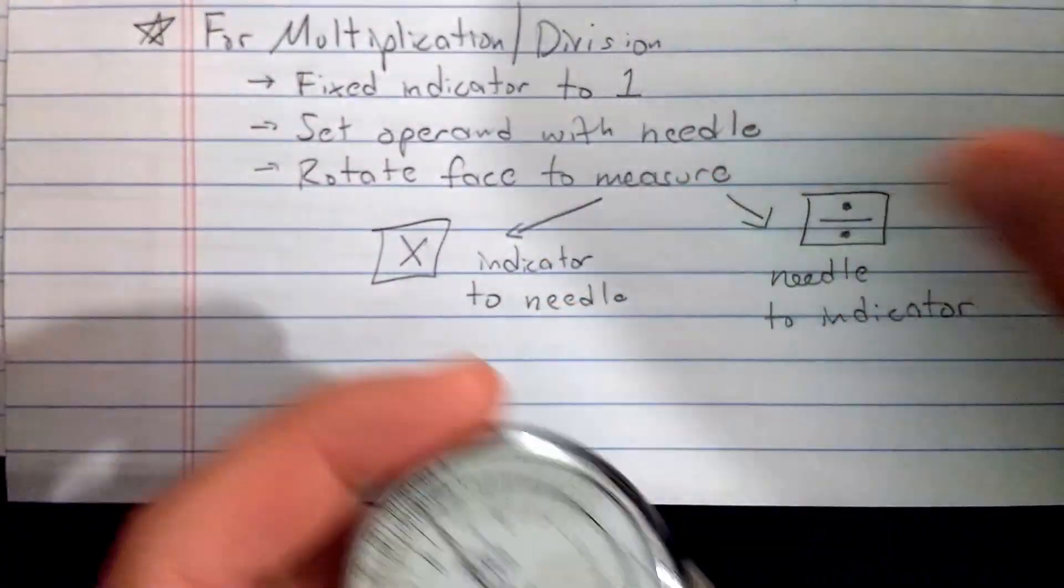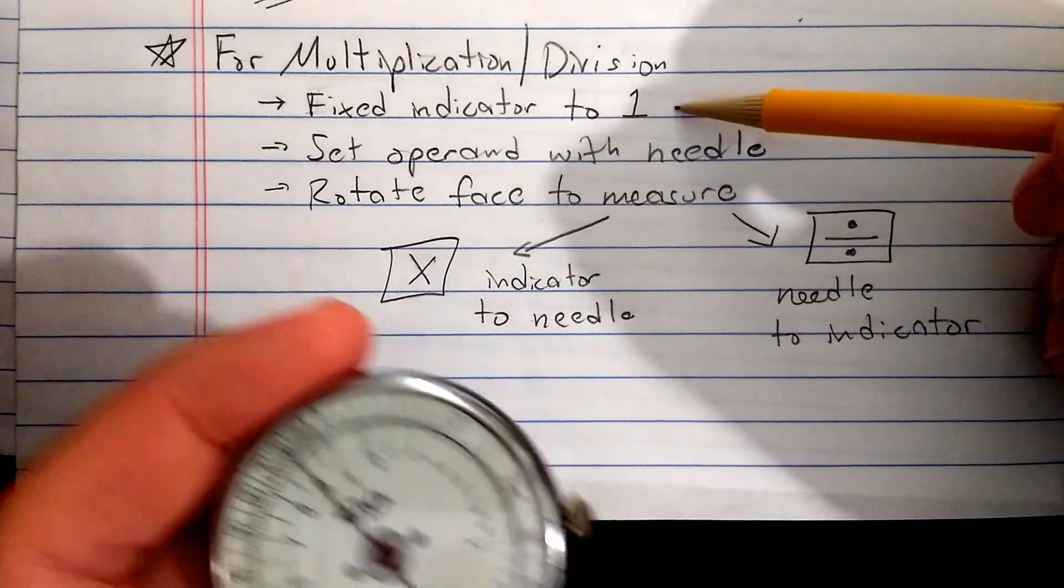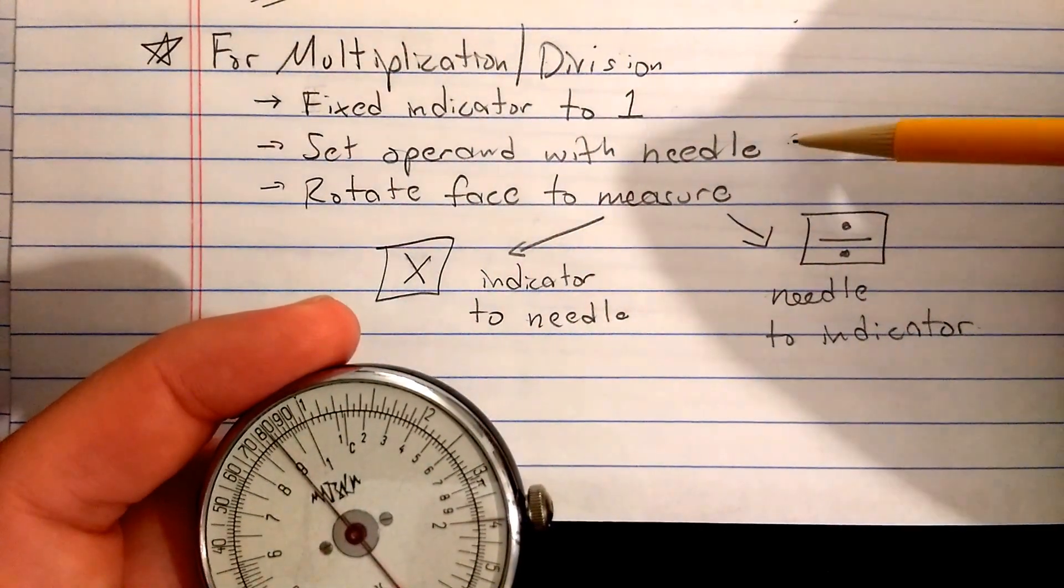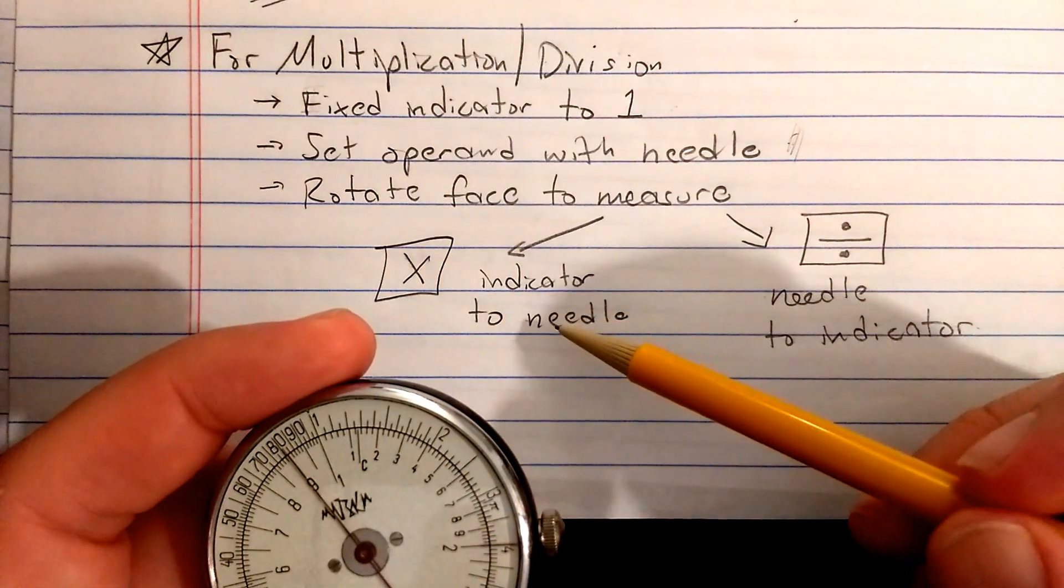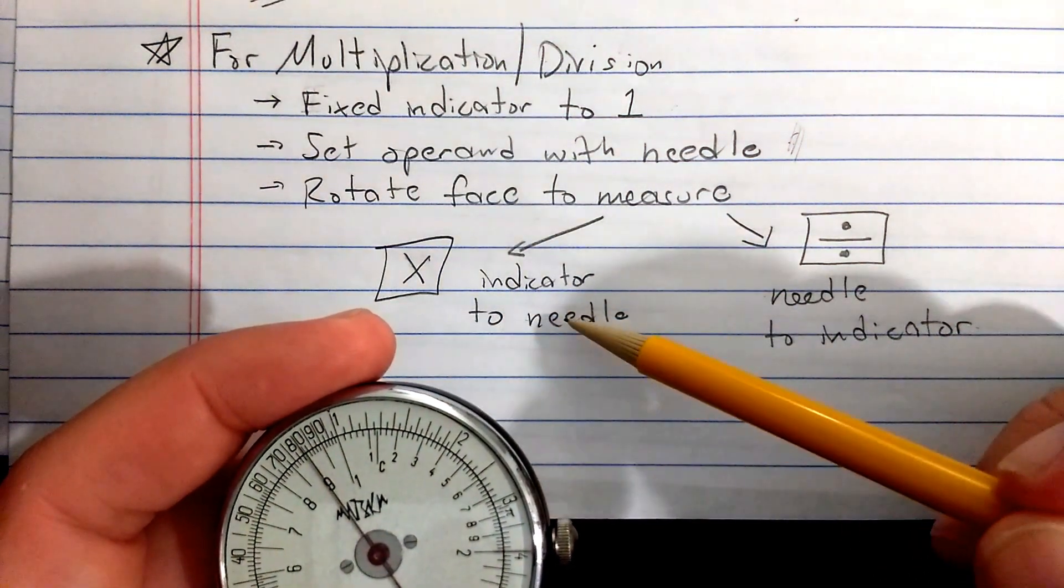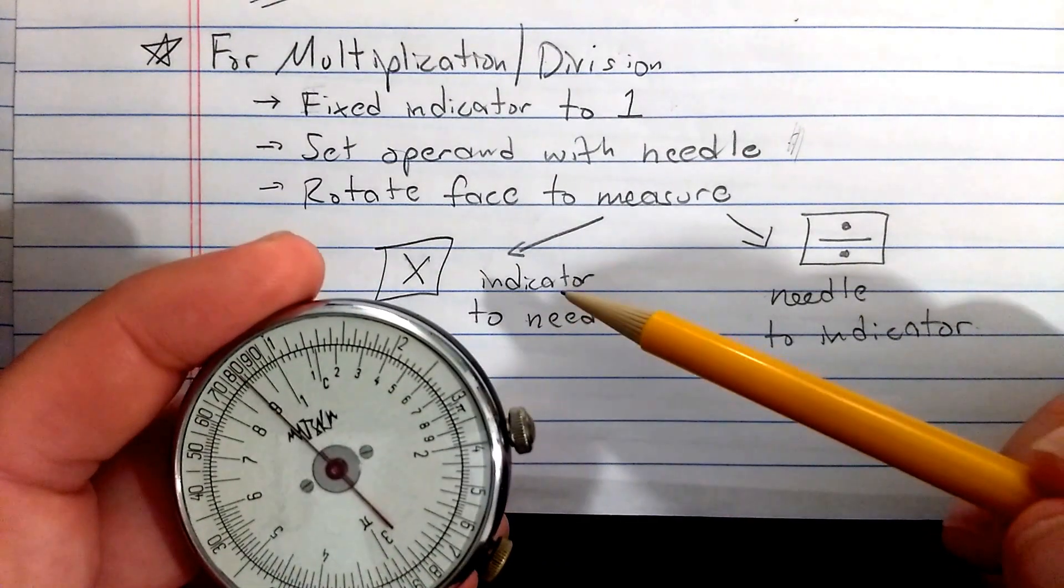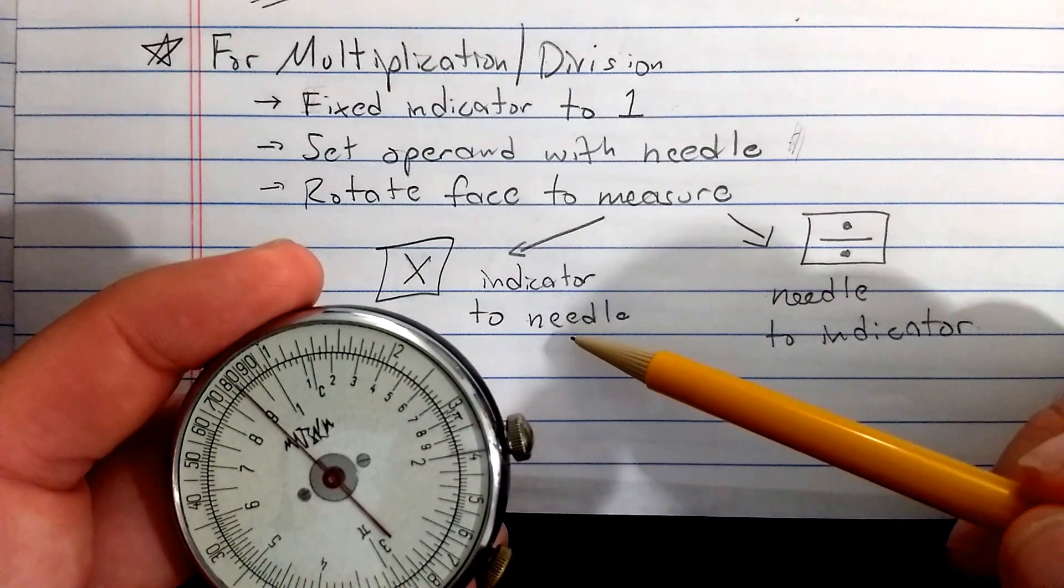Now, just as a summary here for multiplication and division, I'll set the fixed indicator to 1. That's the left end of the caliper. Then I set the operand number with the needle. Then to multiply, I move the indicator. I move from indicator to needle. So I put the number I want to multiply at the indicator. Then I read the result at the needle.